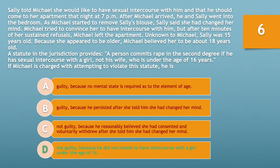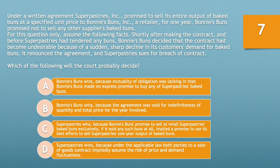In this case, Michael believed Sally to be about 18 years old. As such, Michael did not have the specific intent to commit rape in the second degree — he did not intend to have intercourse with a girl under the age of 16. Therefore, if Michael is charged with attempting to violate the statute, he should properly be found not guilty.